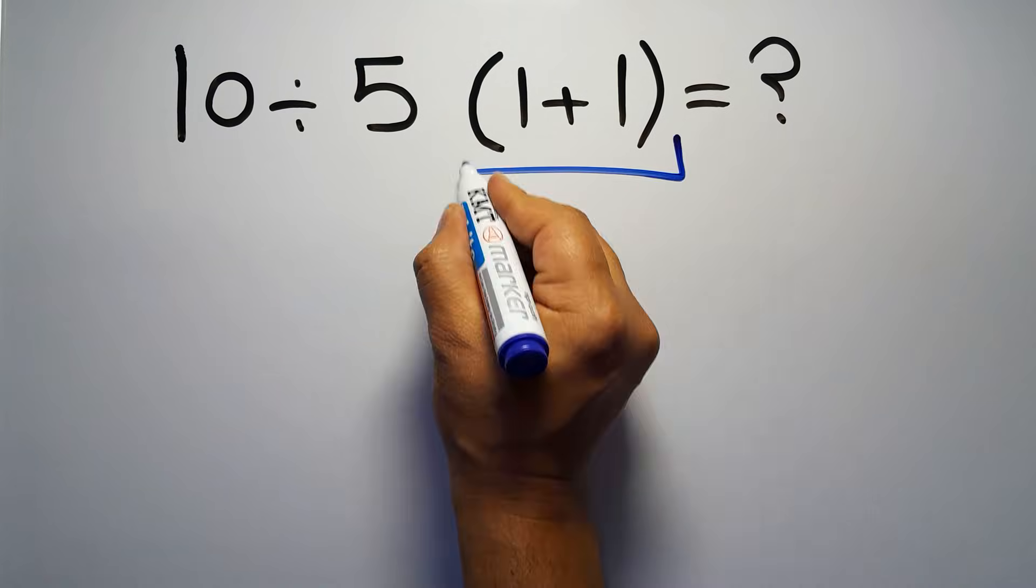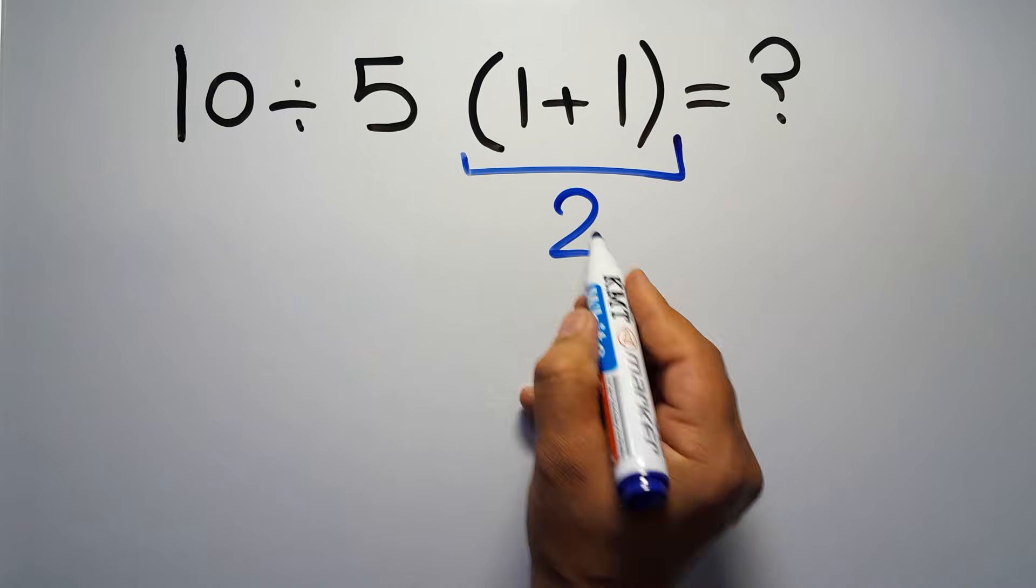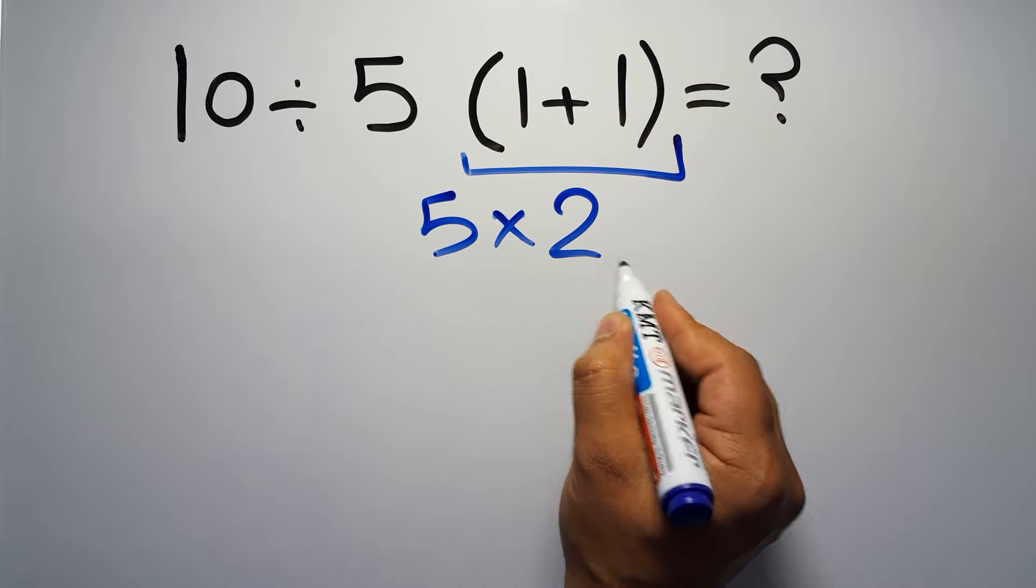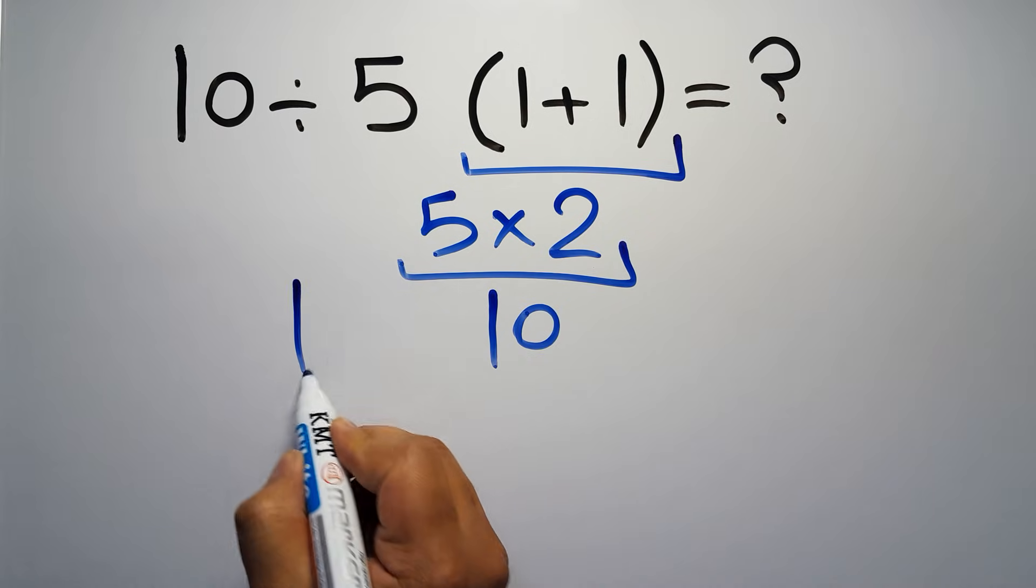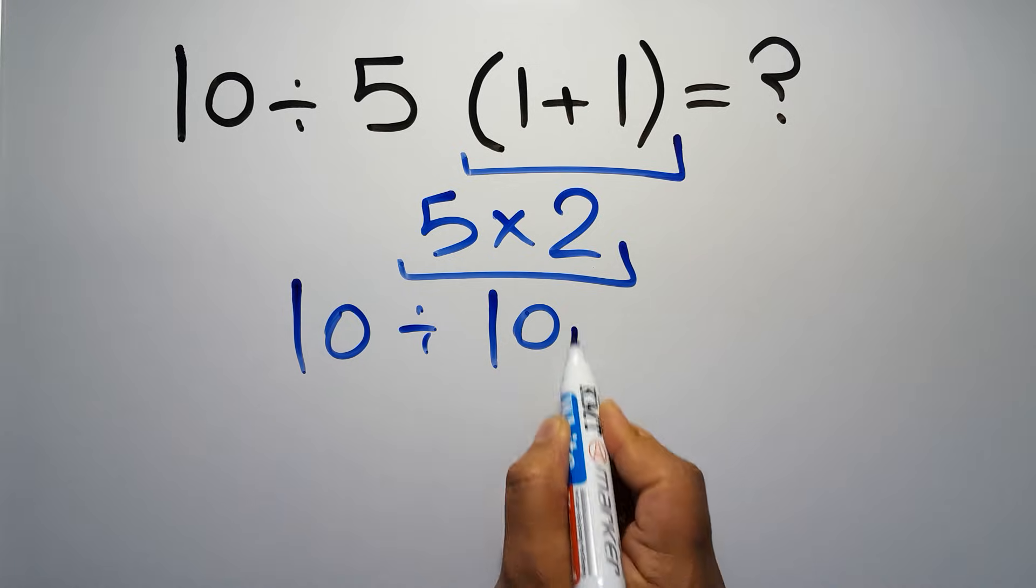1 plus 1 gives us 2, and 5 times 2 is just 10, so 10 divided by 10 gives us 1.